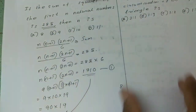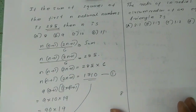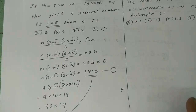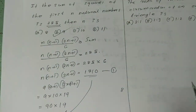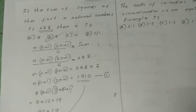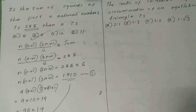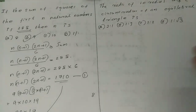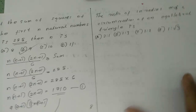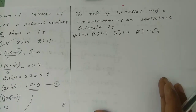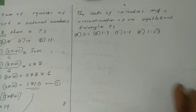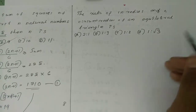The sum of squares of the first N natural numbers gives us the nth value answer. Next, we will find the ratio of the inradius and circumradius of an equilateral triangle.